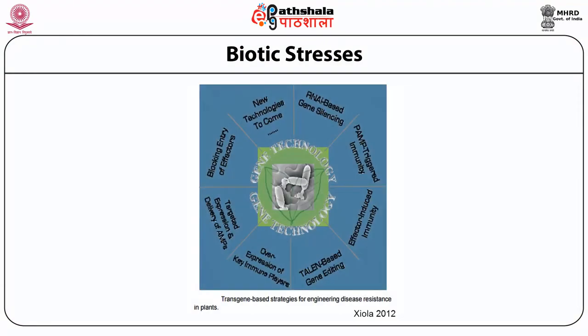Traditionally, breeding technology has been used to develop insect-resistant varieties. Nowadays, modern DNA recombinant technology is used to develop biotic stress-tolerant varieties. This slide shows a diagram of transgenic strategies for engineering disease resistance in plants, illustrating how these new technologies can be applied.